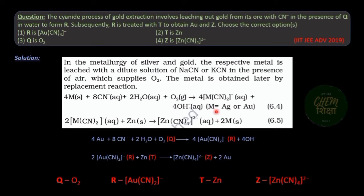Now what the question says is leaching of gold with cyanide ions in presence of Q in water to form R. So here the missing reagent Q is oxygen and R that is formed is the di-cyano complex of gold.